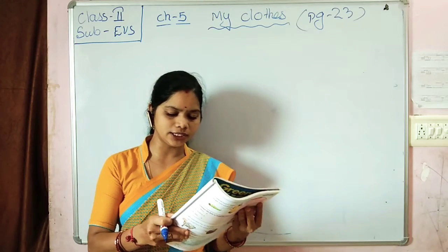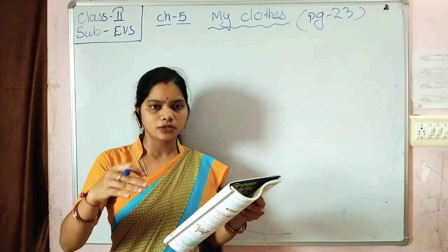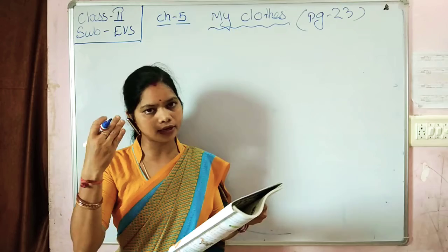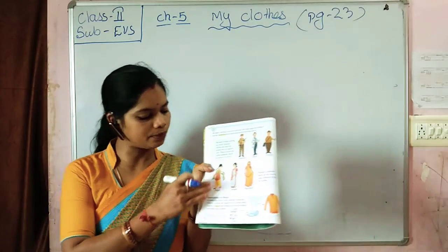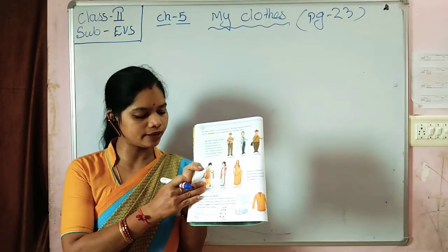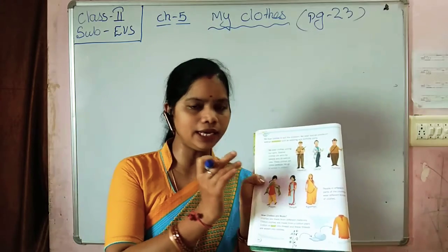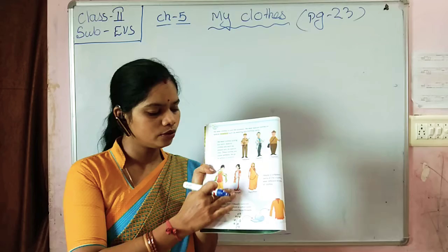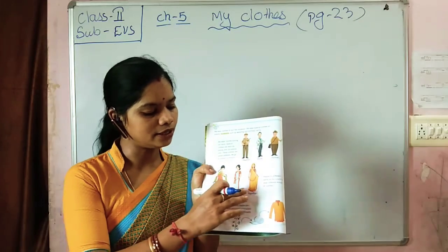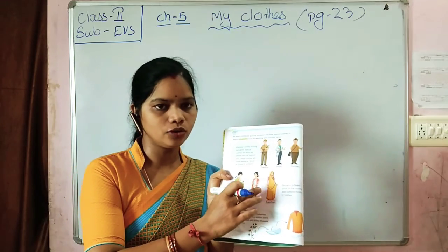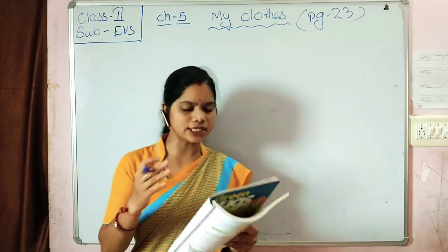People in different parts of the country wear different kinds of clothes. In our country, different regions have different traditional dress. For example, in Punjab and North India, people wear Punjabi dress. In Rajasthan, they wear different traditional clothing.